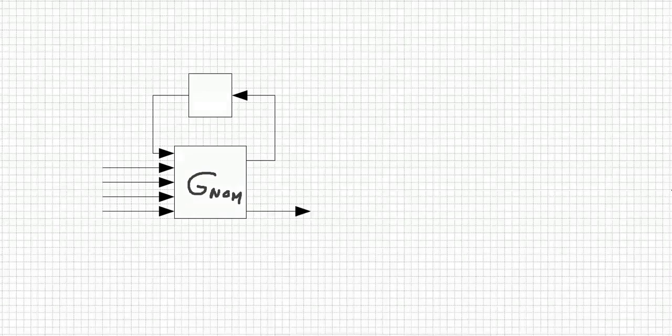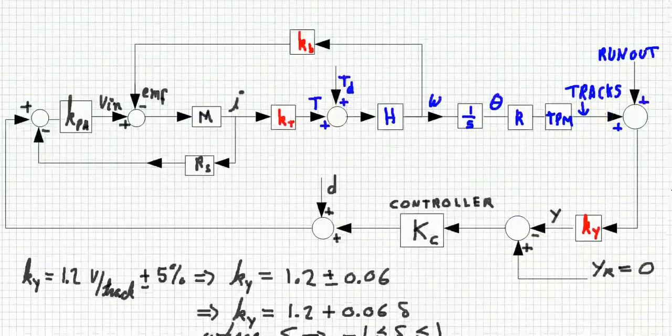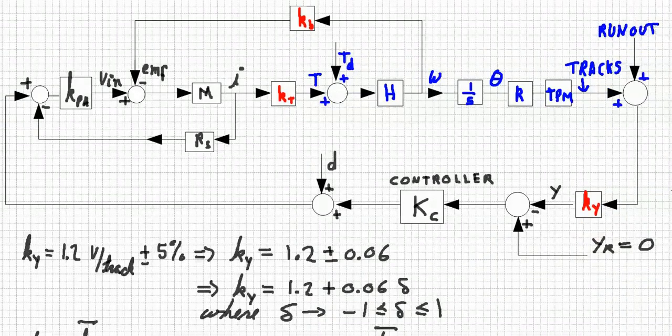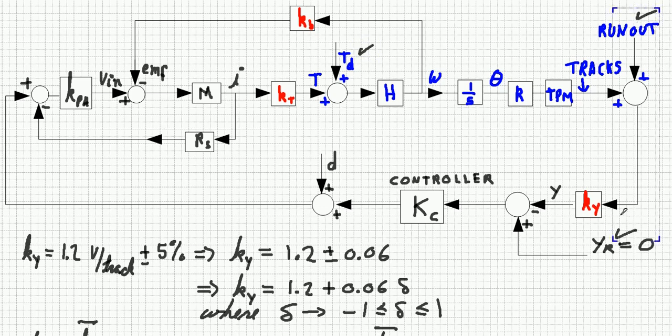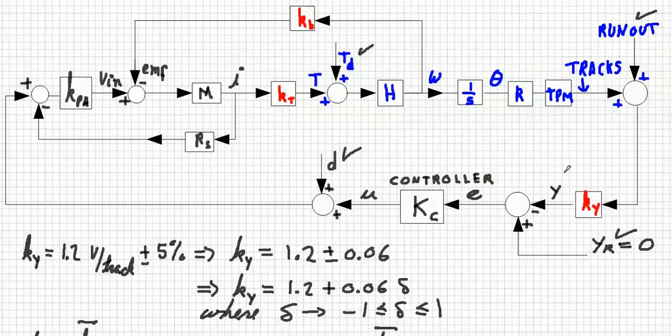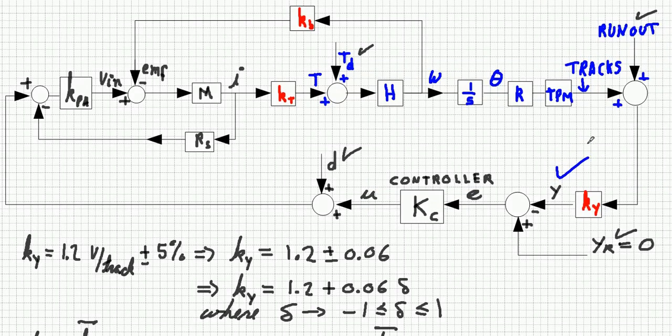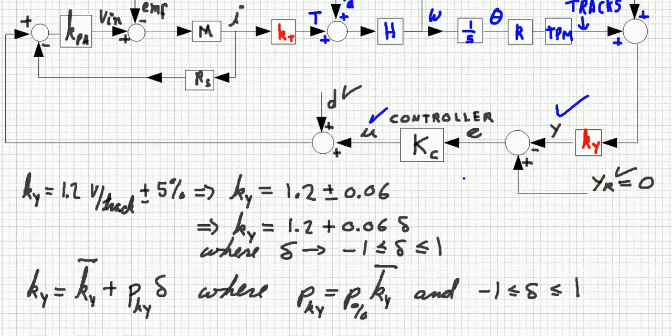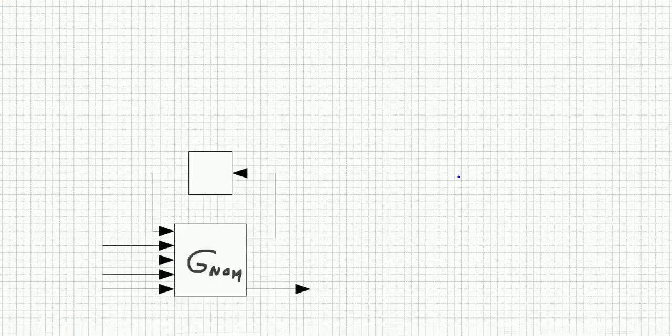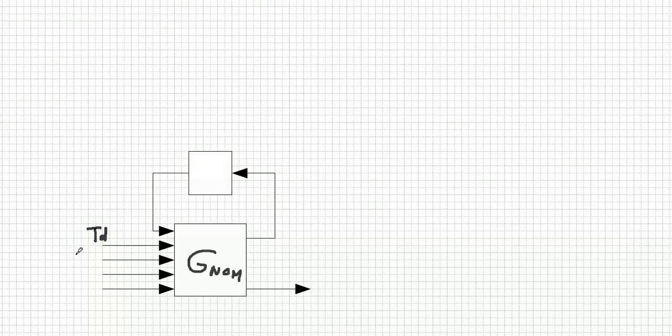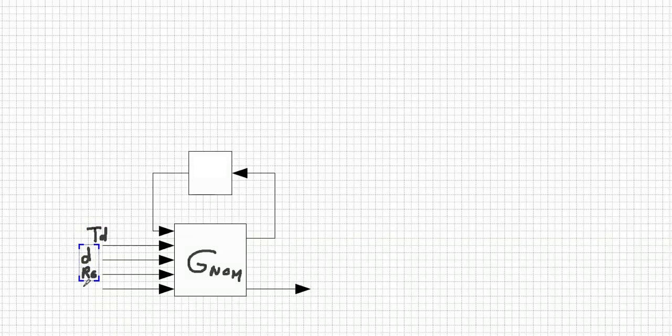If we scroll up, we can see what are our inputs. They are the disturbance TD, the runout, the reference YR, the disturbance D, the control U, and our output is Y. Let's scroll down and then let's complete our LFT block diagram. Then we have here TD, D, the runout, and the control U. The output is Y.